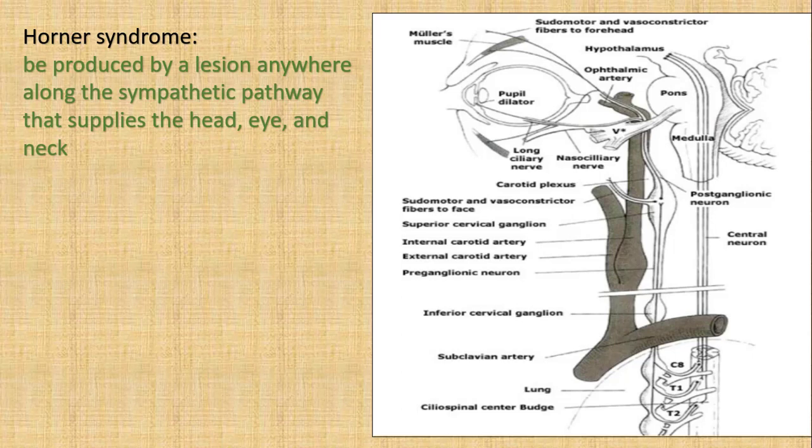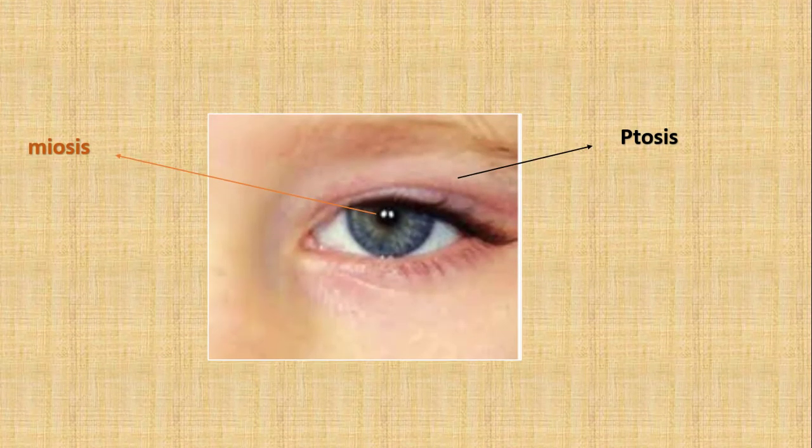Horner syndrome is an important disease. It can be produced by a lesion anywhere along the sympathetic pathway that supplies the head, eye, and neck. It can be caused by any mass in the upper lobe of the lung, or any lesion alongside the carotid artery that goes to the eye.